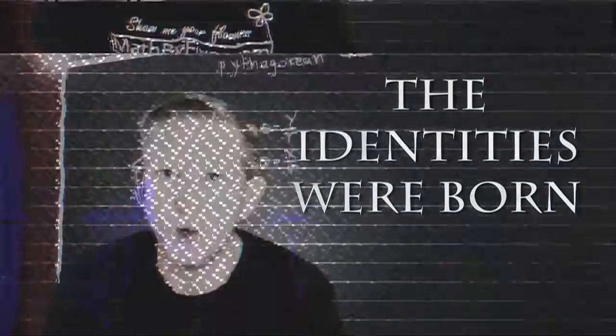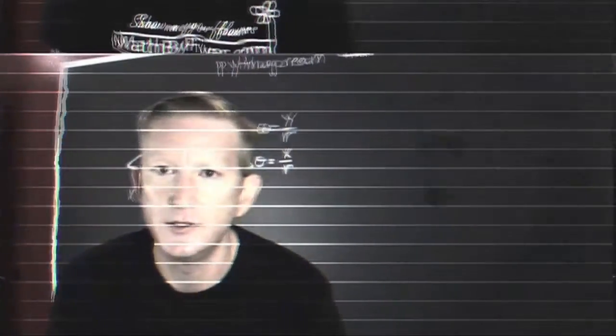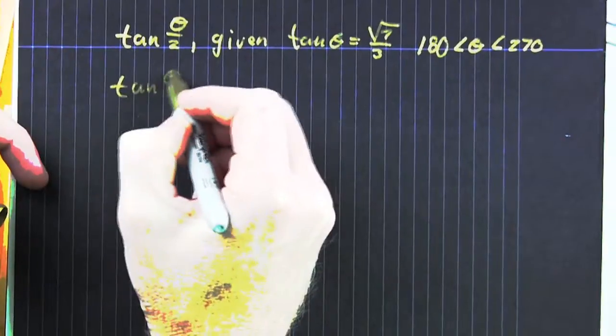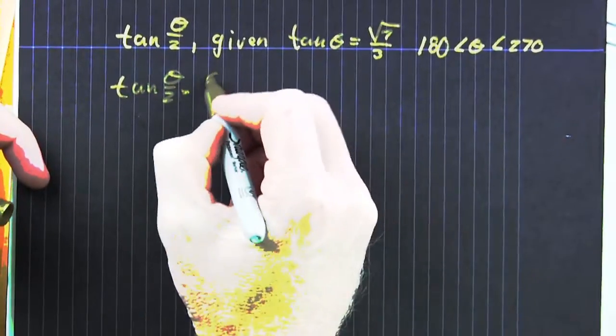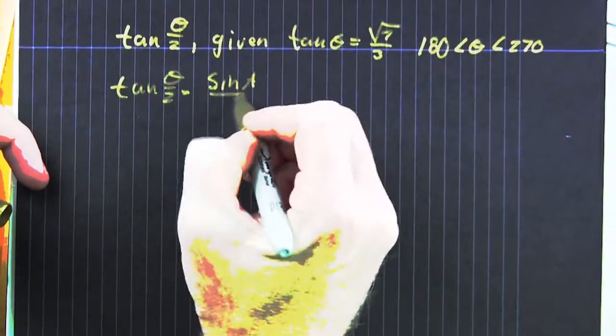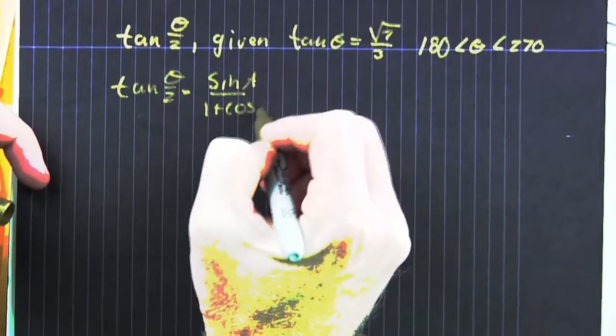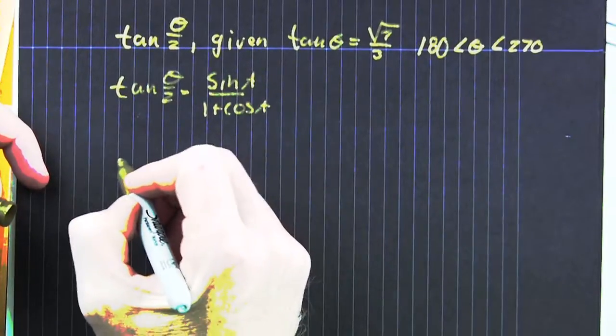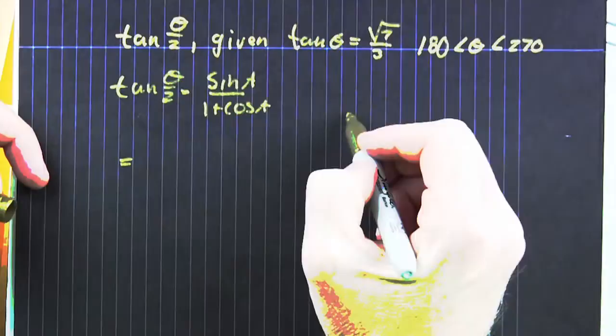And this is where the identities were born. We're trying to evaluate the tangent of that half angle, and we're given a couple of things. The tangent of theta is root 7 over 3, and theta's in the third quadrant, so we expand out that half angle.